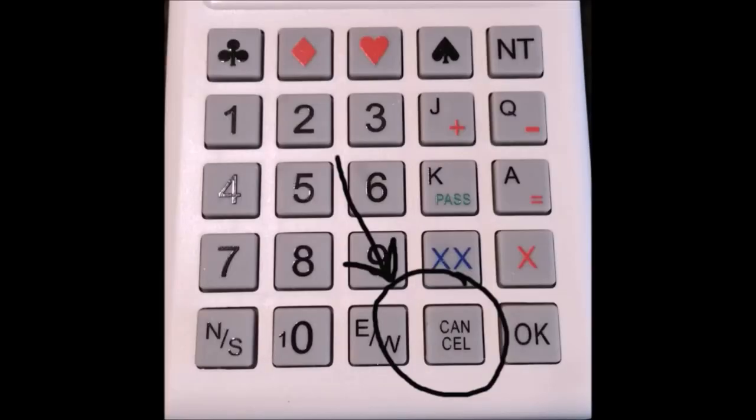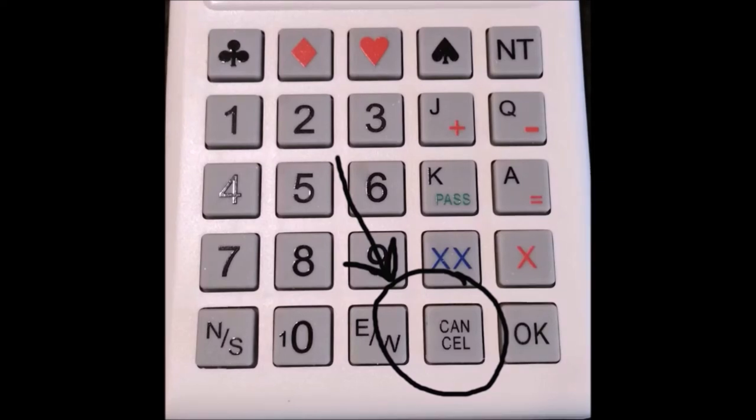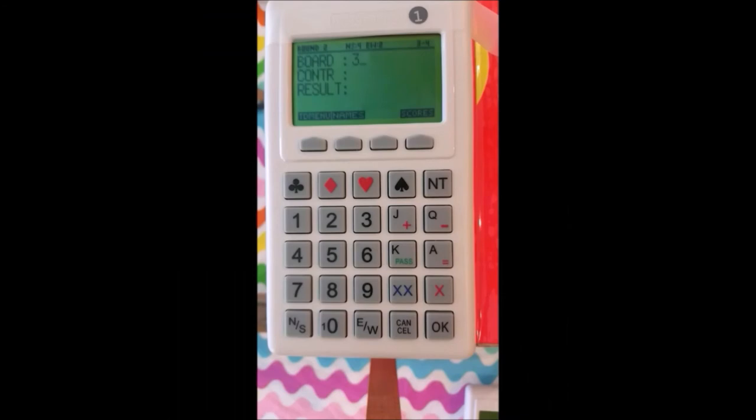Finally, let's talk about when we make a mistake and we want to go back and correct it. Many times you can do that by hitting the cancel key. The cancel key is shown here. And if you make a mistake, just hit cancel and it should take you back one step. You can go back several steps. That's basically how you get into the system and set up the boards.